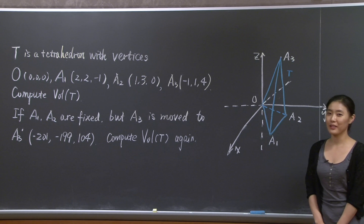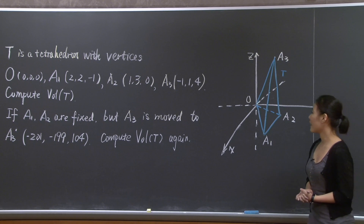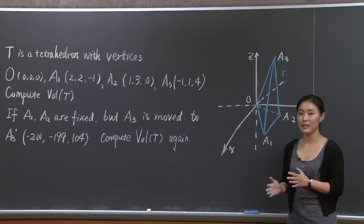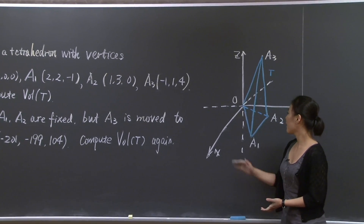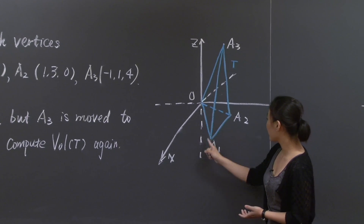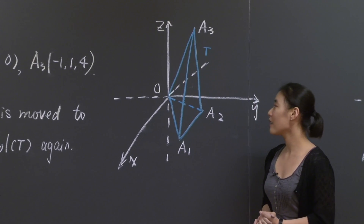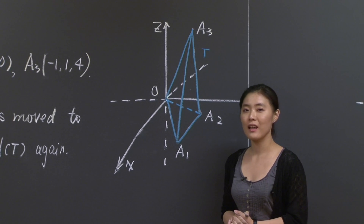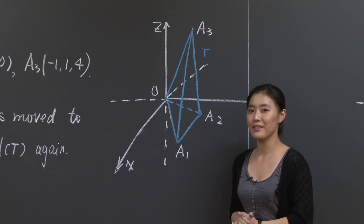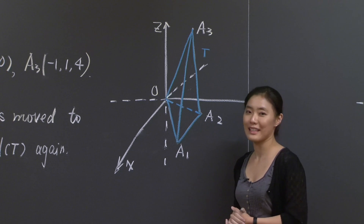Alright, let's complete this picture together. We need a parallelepiped so that we can use the fact that the determinant is related to the volume. I have a tetrahedron, and let's look at these three edges: OA1, OA2, and OA3 — all of them meet at the origin. So let's consider the parallelepiped spanned by the same three edges. It's a natural choice because it shares three edges with T.